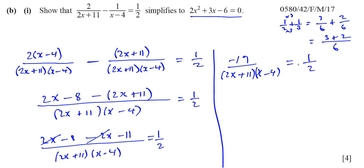Now we can cross multiply. We can multiply both sides by 2, basically, if you get rid of this half. And I can also multiply both sides by 2x plus 11, x minus 4 to get rid of this fraction. So the 2 goes up there, basically. You've got minus 19 times 2 equals, and you've got 1 times this bracket, which I'll write it just so you can see, 2x plus 11 times x minus 4.